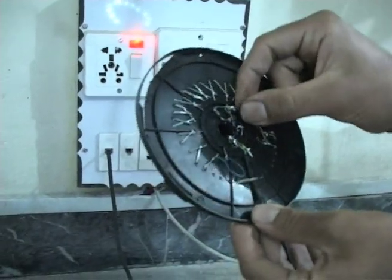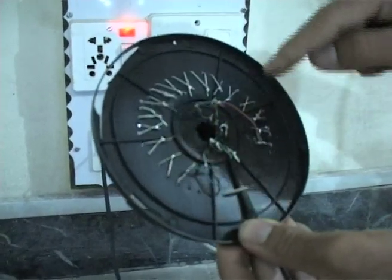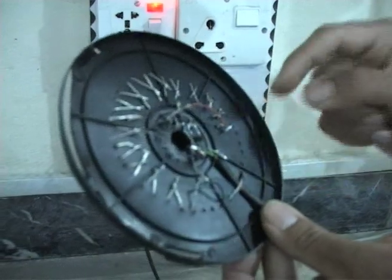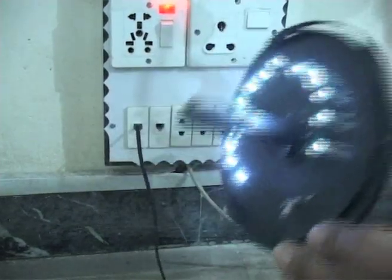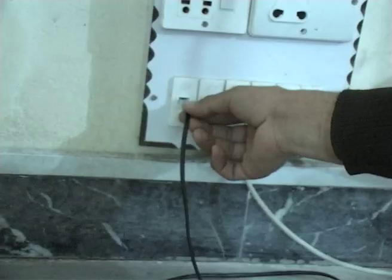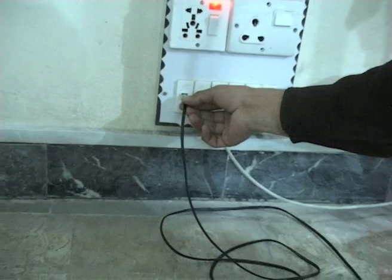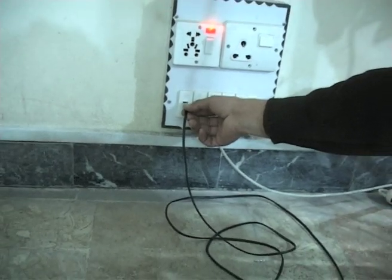This project can be improved to produce AC of 110 volts by using an extra device, a step-up transformer. As you know, the step-up transformer steps up the voltage from low level to high level.